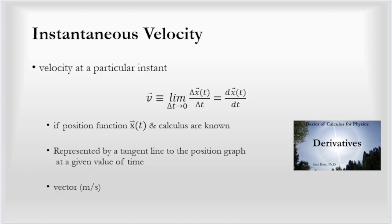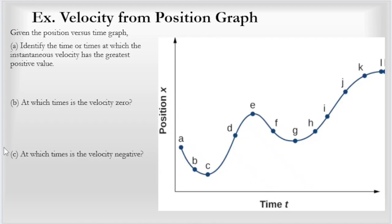I've prepared a couple of examples. The first looks at a graph focusing on the tangent line feature of velocity given a position versus time graph. You can see the object is doing different things — moving away from its initial position, then toward the origin, then away again, turning around at various points. It has some interesting motion.